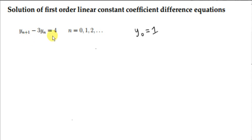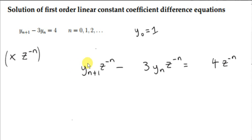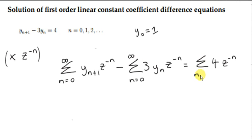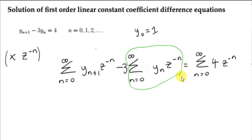We are going to use the z-transform method to solve this. The first step is to multiply the difference equation by z to the power of minus n, so we can bring in the definition of the z-transform. The next step involves summing each of these terms from n equals 0 to infinity, because that summation is involved in the definition of the z-transform. Notice that taking out the factor of 3 — a constant — it can be pulled through the summation sign, leaving the definition of the z-transform of the sequence y(n), which we write as big Y(z).